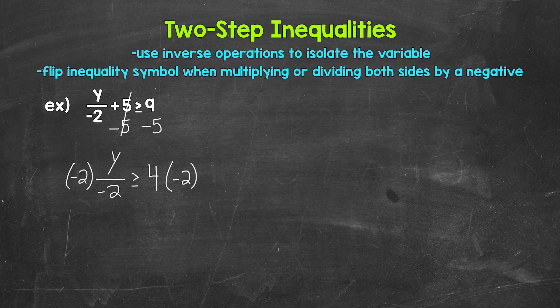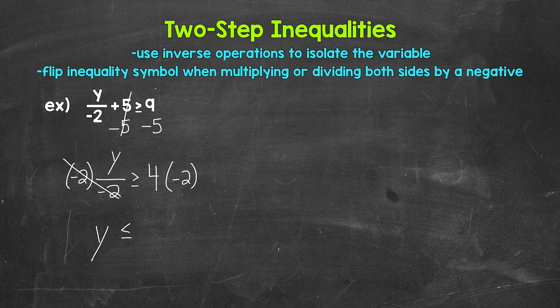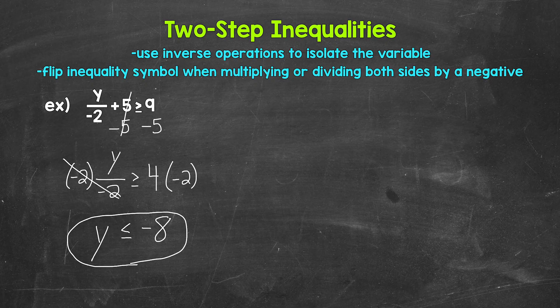Remember, when we multiply or divide both sides of an inequality by a negative, the inequality symbol flips — it changes direction. So on the left, these negative twos cancel each other out. Y is now isolated. The inequality symbol flips. And then on the right, four times negative two gives us negative eight.